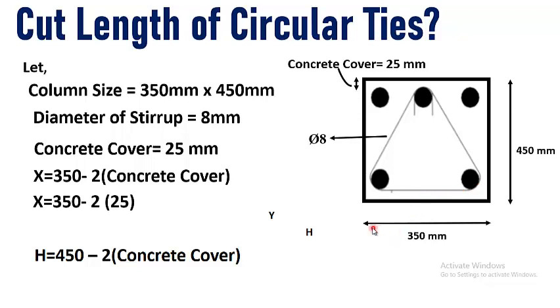So x is equal to 350 minus 2 times of concrete cover. That is we will subtract concrete cover from both sides to get the base of the triangle. That is x is equal to 300 mm. So x is the base of this triangular stirrup.